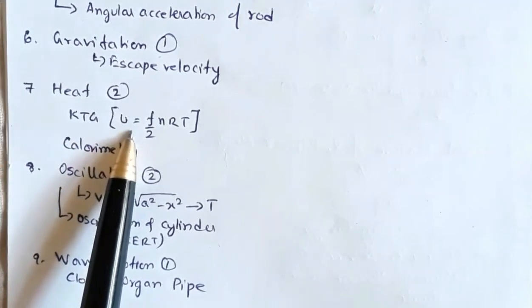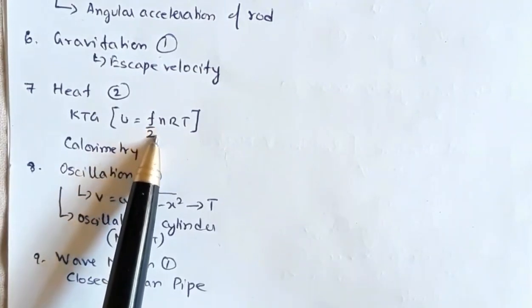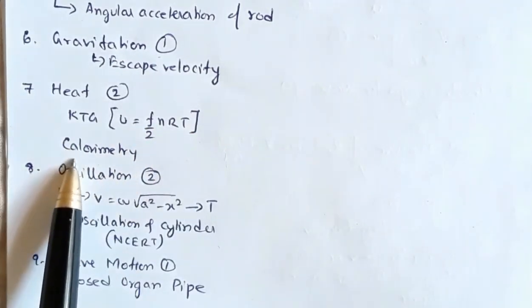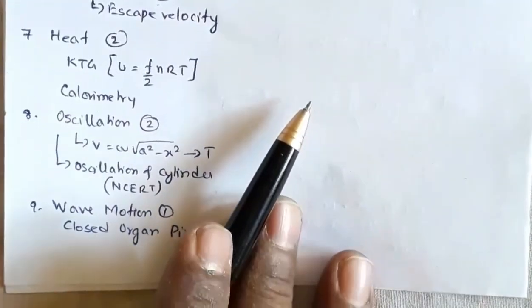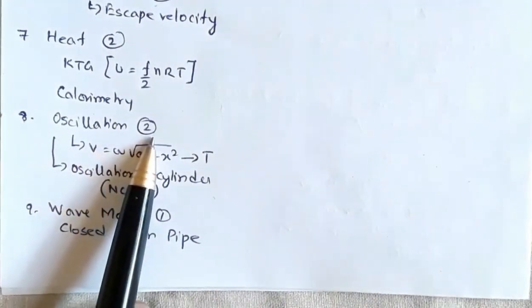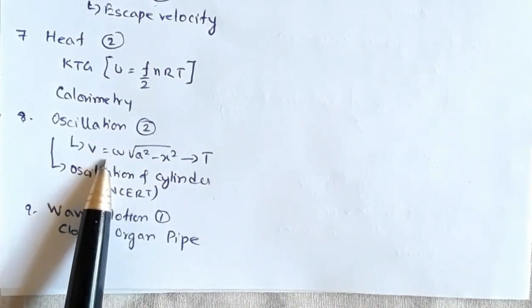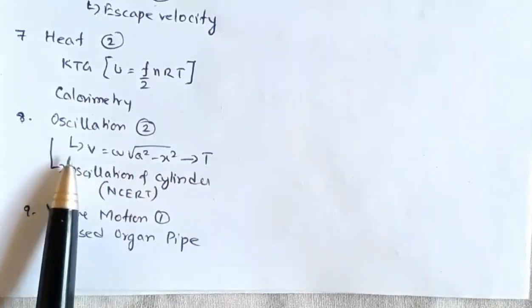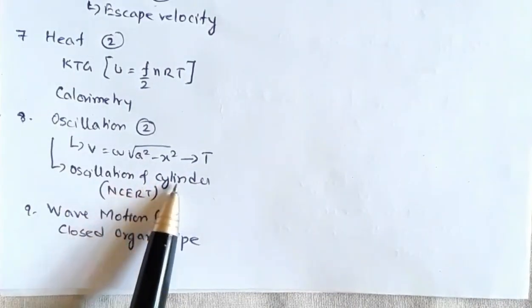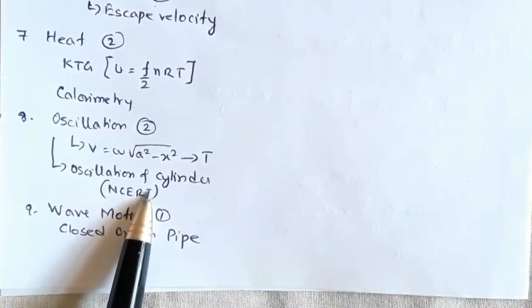One question from the topic calorimetry. From oscillation there were two questions: one involving the relation between velocity and time period, and the other involving the oscillation of cylinder in a liquid as given in NCERT. This is an additional exercise question in NCERT.